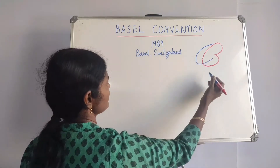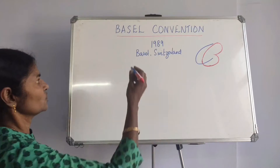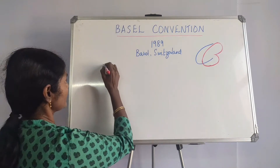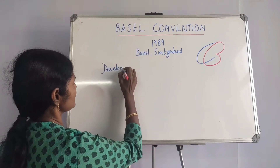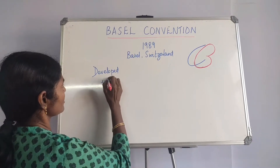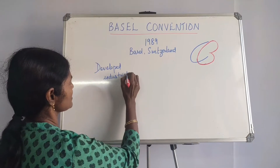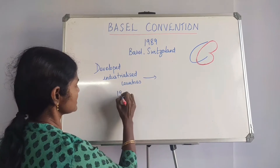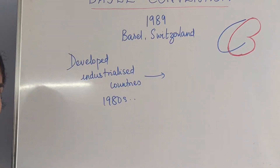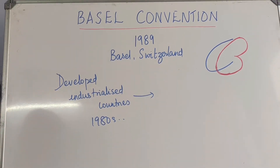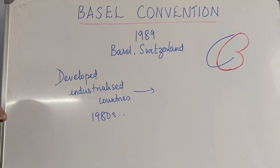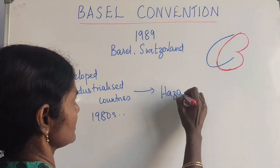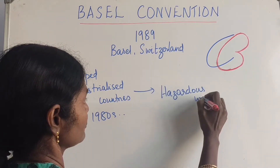This is the logo of the Basel Convention. Now, what was this about? When you have developing countries or developed — these developed countries had a lot of industries, so you can also call them industrialized countries. As these industries started increasing and spurting in large numbers, there was a lot of hazardous waste that came out of them.